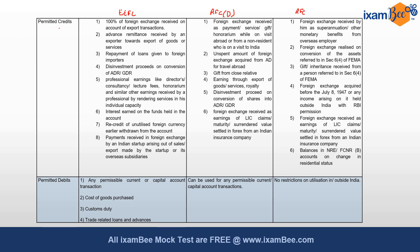For the EEFC account there are eight permitted credits. The first is 100% of foreign exchange received on account of export transactions. The second is advanced remittance received by any exporter towards export of goods and services. The third is repayment of loans given to foreign importers. The fourth is disinvestment proceeds on conversion of ADR and GDR.